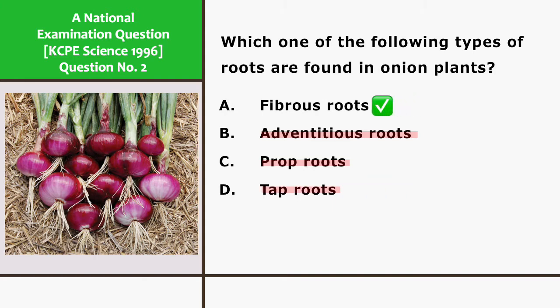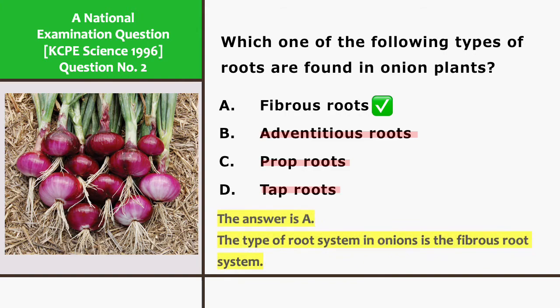The answer is A. The type of root system in onions is the fibrous root system.